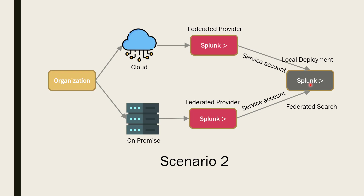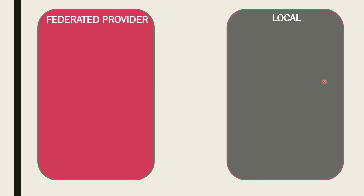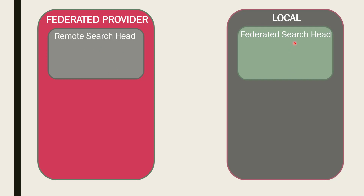Now let's talk about the technical architecture of the federated search. Taking a single federated provider and a single local deployment: the federated provider can be a single instance with indexers or a search cluster, and the same applies to the local deployment. The search head in the federated provider is called the remote search head, and the search head in the local deployment is called the federated search head.